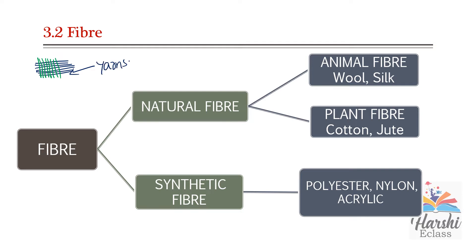Now try to untwist a yarn — you will see that it is made up of multiple thin, long, hair-like structures. Many thin long hair-like structures together form the thread, which is nothing but yarn. Those long thin hair-like structures are called fibers. So fabrics are made up of yarns, and yarns are in turn made up of fibers.